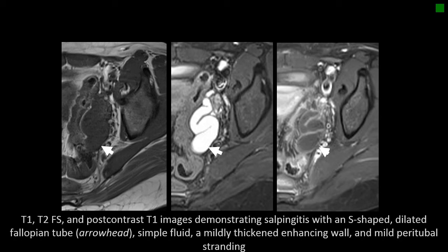This was a case of acute salpingitis, which is on the spectrum of acute PID, in which just the fallopian tube is involved — although presumably the cervix and uterus were also inflamed, given that this is an ascending infection.